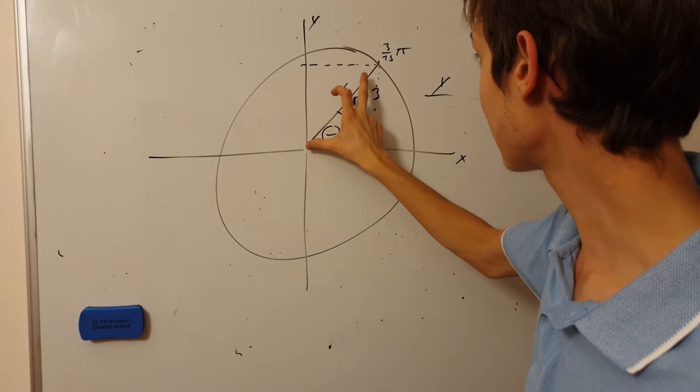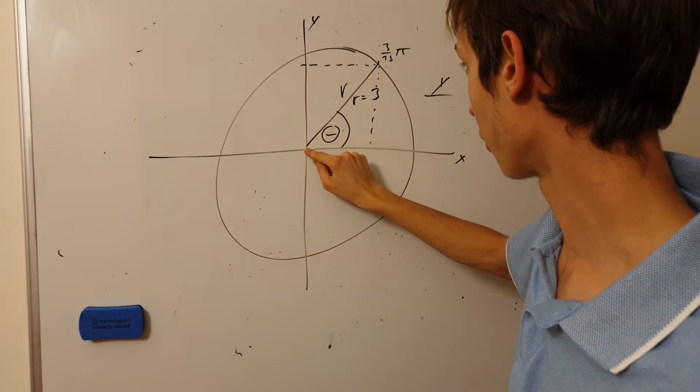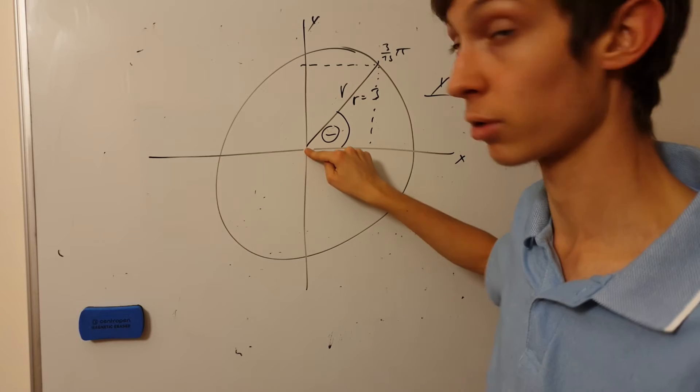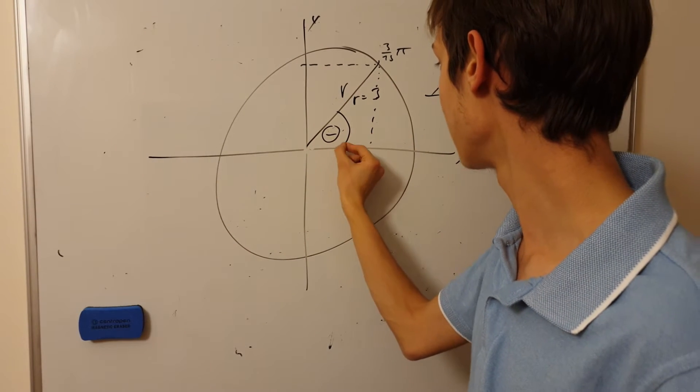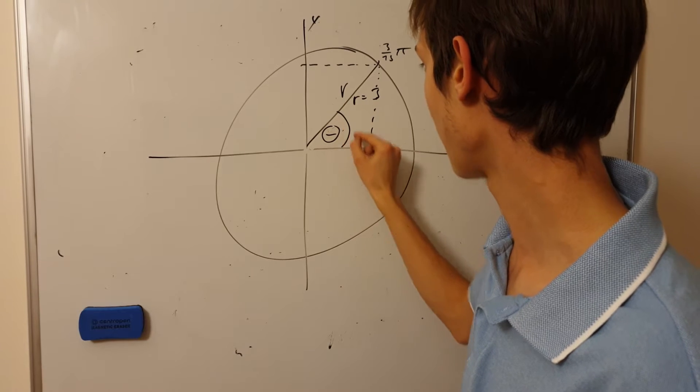First is the radius, so the actual distance from the origin, from the center 0,0, for the Cartesian points. And then the second piece of information you need is this angle.